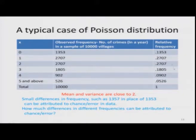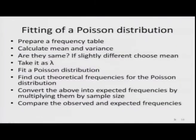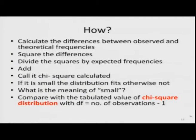Fitting a Poisson distribution means preparing a frequency table, calculating mean and variance — if they are approximately equal, choose the mean and take it as lambda — fitting a Poisson distribution, finding out theoretical frequencies, converting those into expected frequencies by multiplying by sample size, and comparing the observed and expected frequencies.